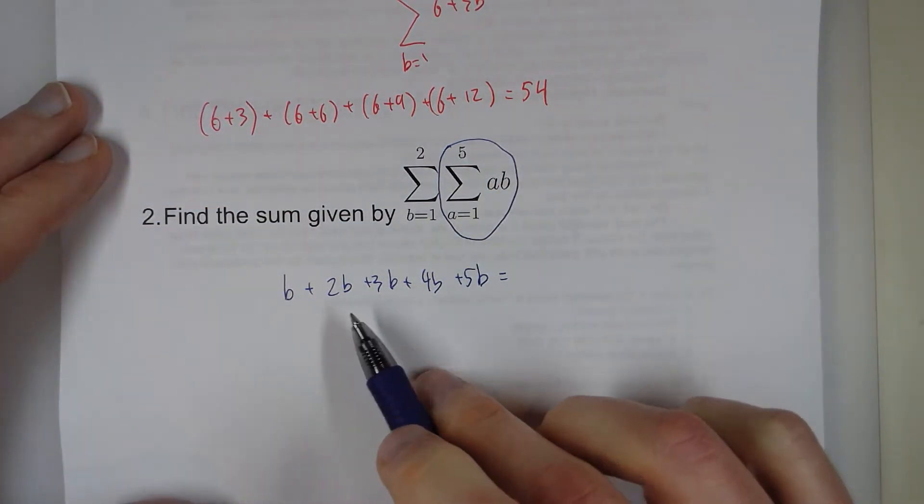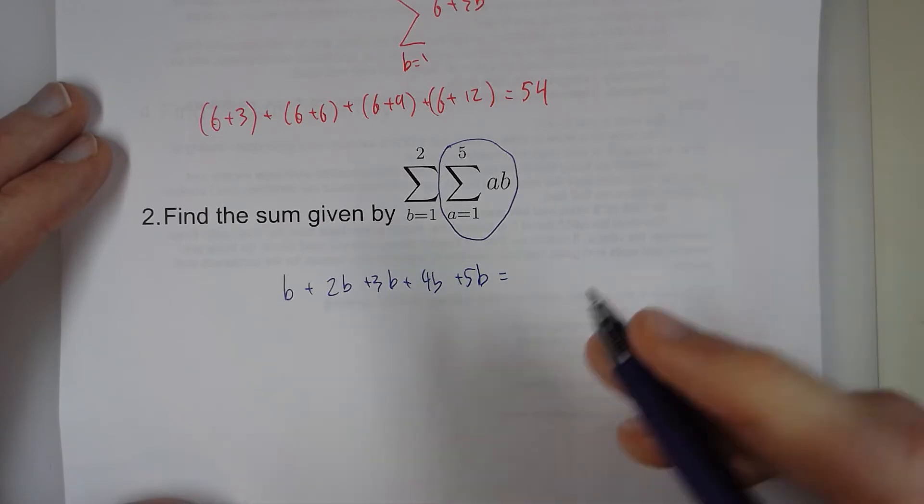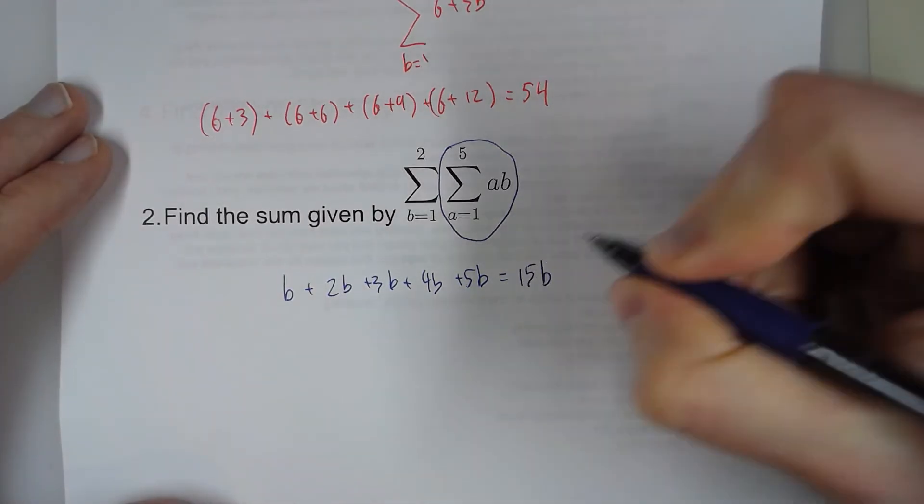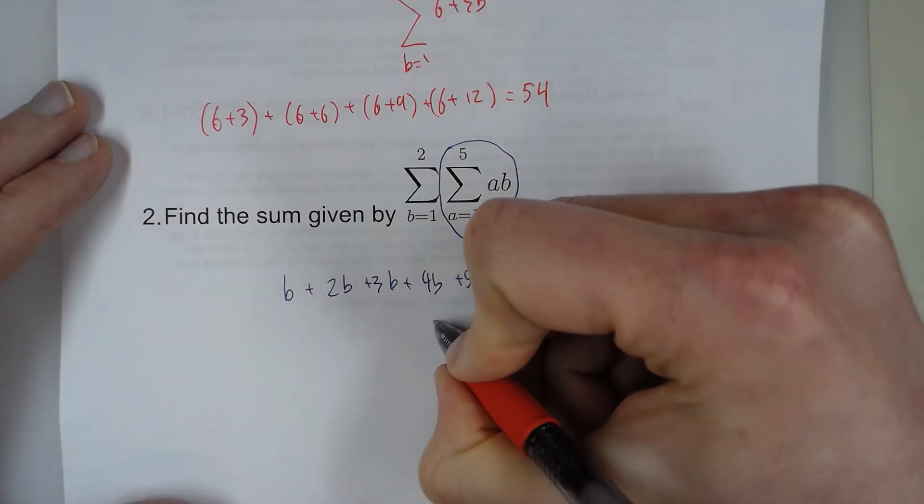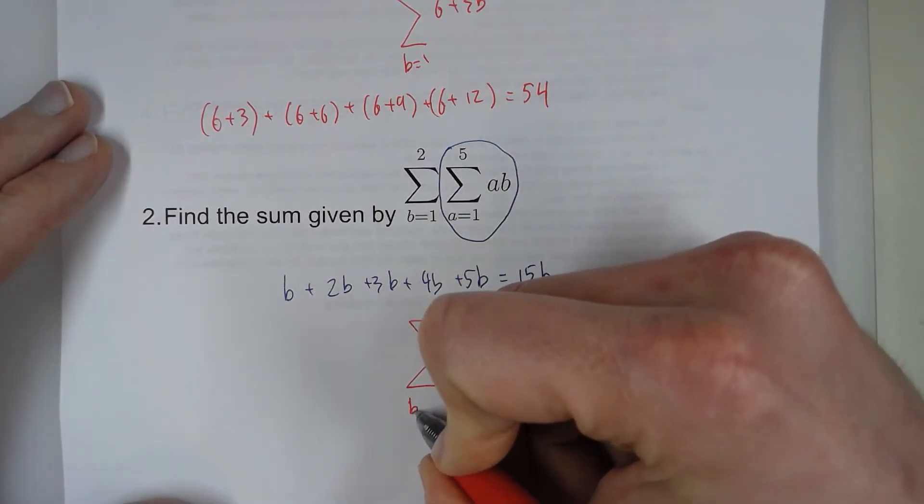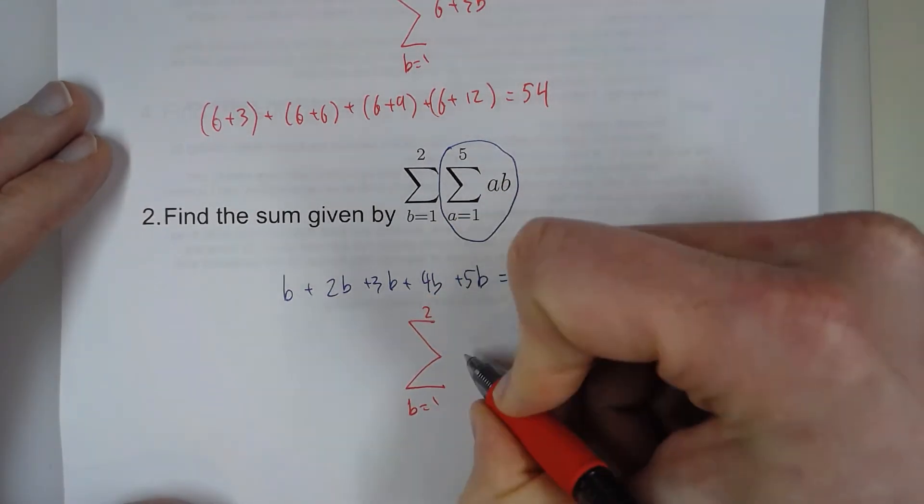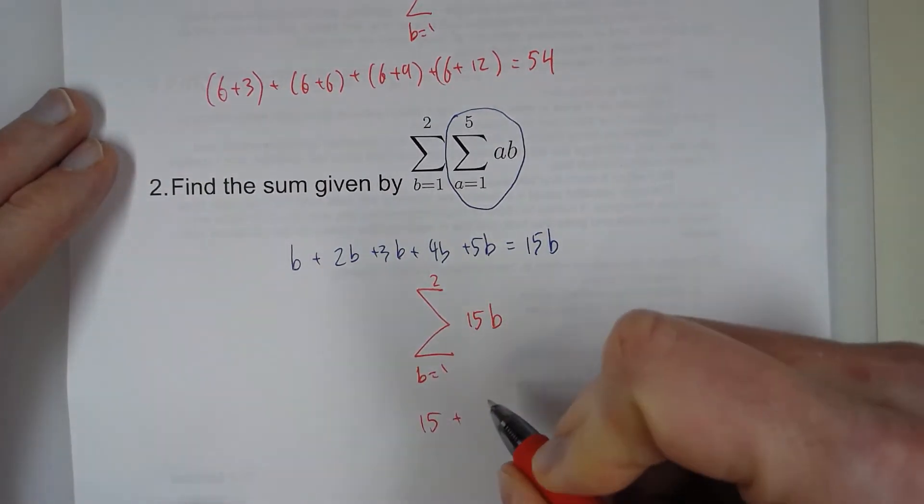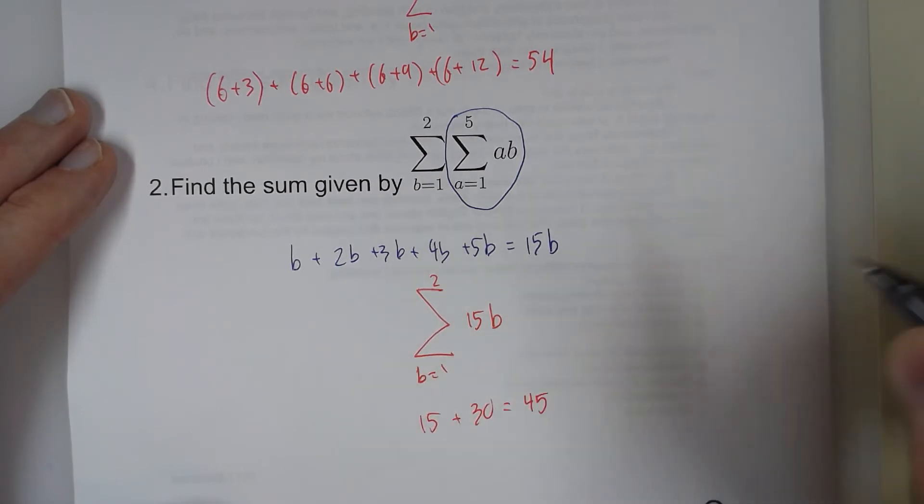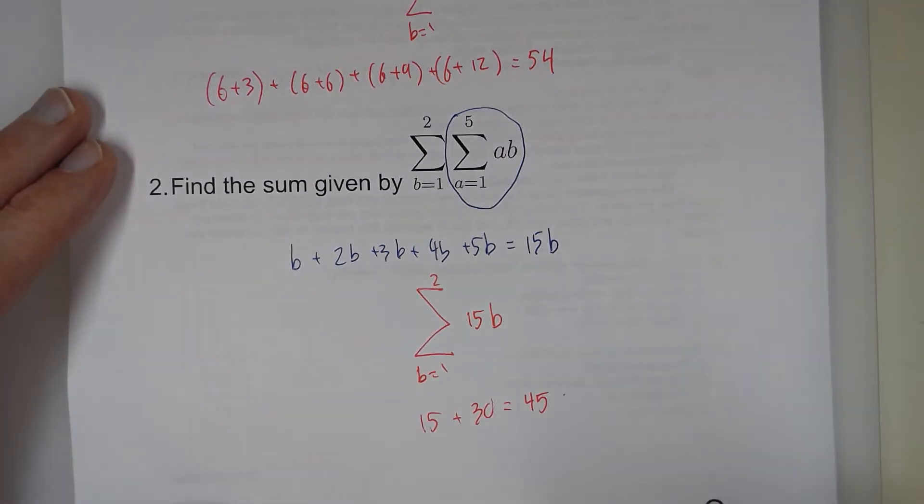So 1 plus 2 is 3, plus 3 is 6, plus 4 is 10, plus 5 is 15b is what that equals. And then we have the other sum. So b equals 1 to 2 of 15b. So we have 15 plus 15 times 2 is 30, which gives us 45 for our sum.